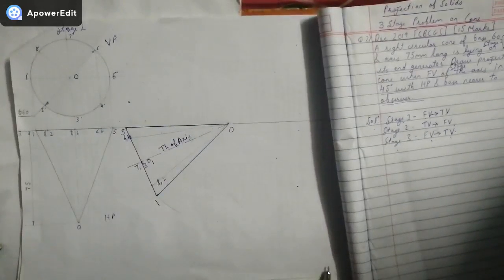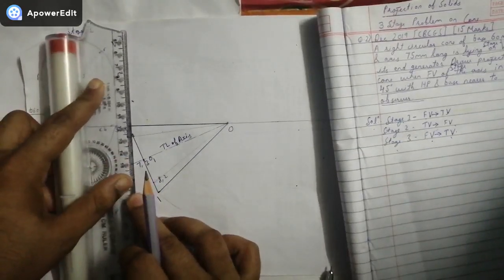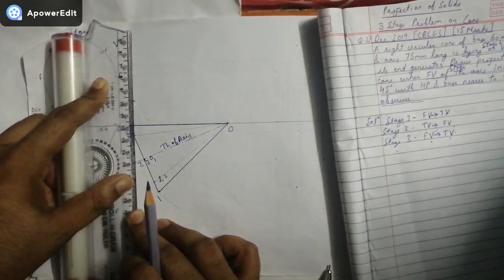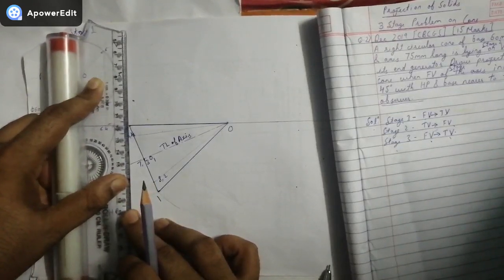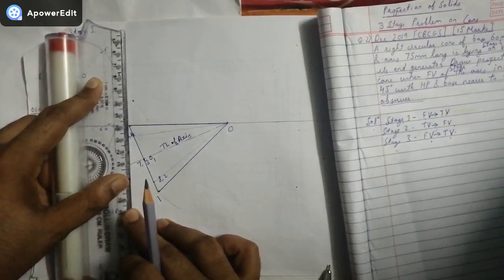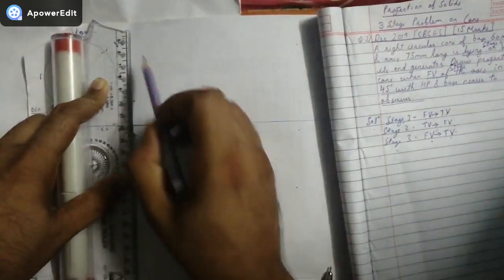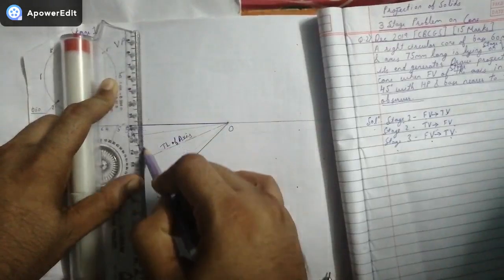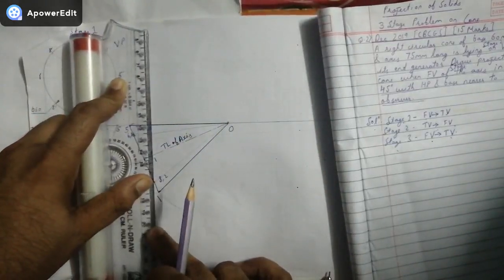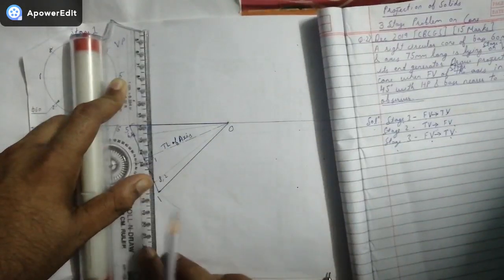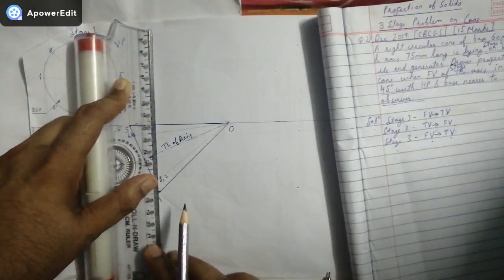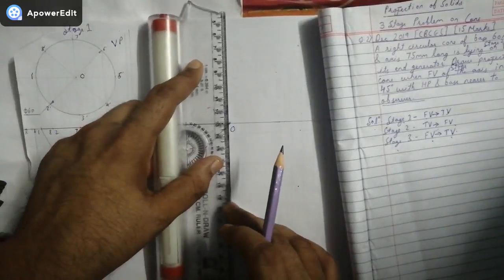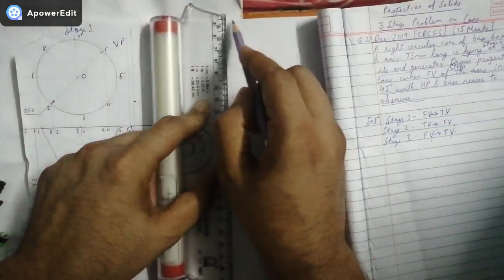Now I will be taking all the projections for the front view from the top view, one by one perpendicular to the XY line, getting all the projections from here. All the points are being projected up, and last but not least, point O is projected like this.